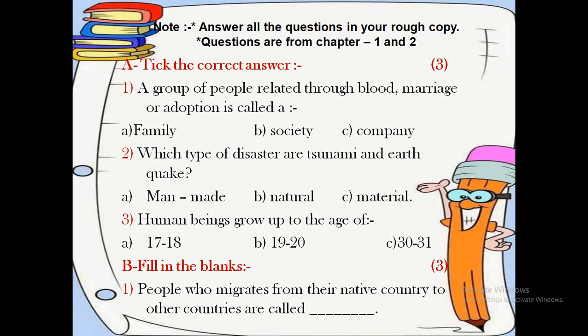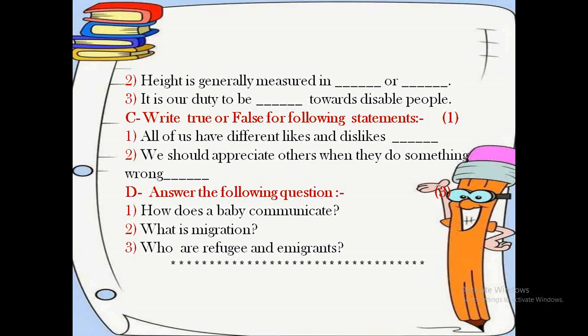Now coming on question number B, that is fill in the blanks. This question is again of 3 marks, and in this question also you will have 3 sub-questions. Question number 1: people who migrate from their native country to other countries are called dash. What are those people known as? You have to write it down.